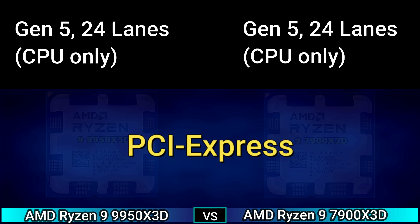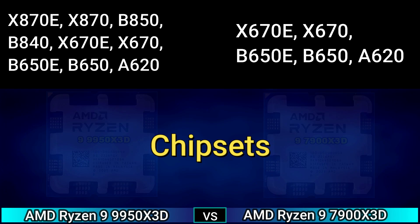PCI Express: Zen 5, 24 lanes, CPU only. Chipset included.